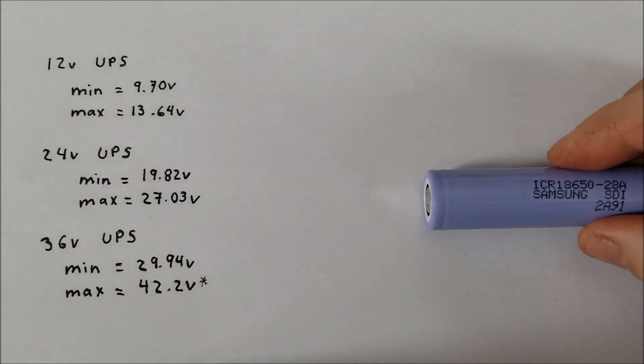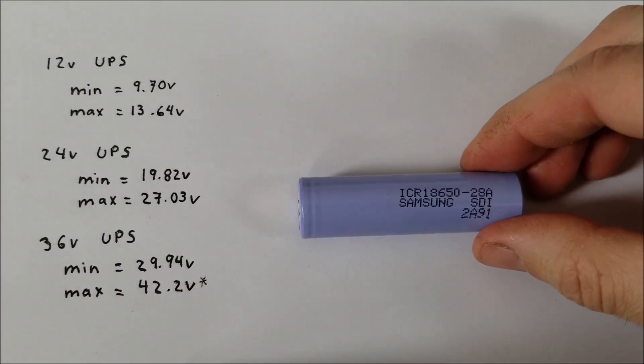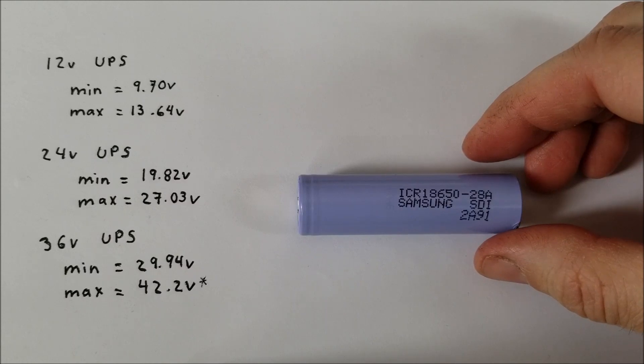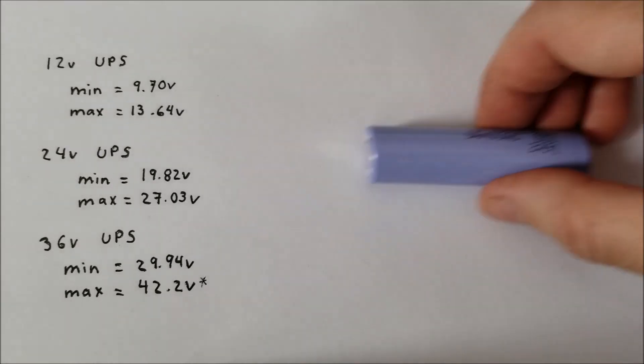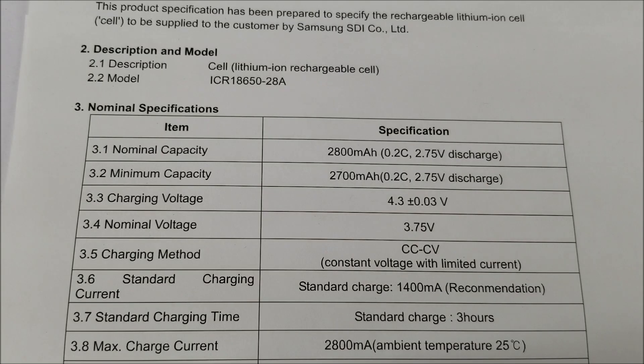Note that Samsung for these batteries here, these ICR18650-28A, they actually have a different maximum charge voltage. So you can see here, the charging voltage is 4.3V. The minimum discharge voltage remains the same at 2.75V. So these can be charged to a higher voltage.